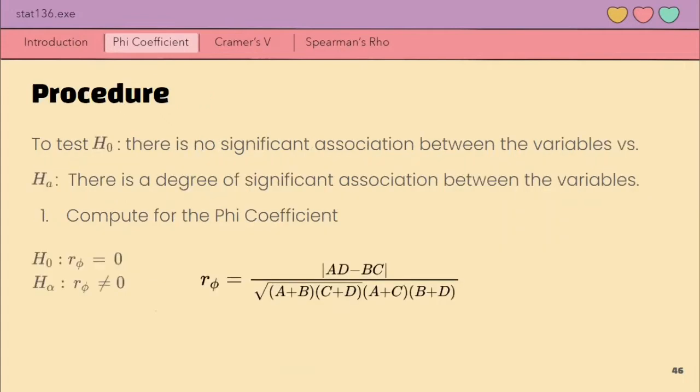For the procedure of testing the null hypothesis wherein there is no significant association between the variables versus alternative that there is a degree of significant association between the variables. First, we will compute for the phi coefficient. So our phi coefficient is equal to absolute value of AD minus BC all over square root of A plus B times C plus D times A plus C times B plus D, which we will find in our 2 by 2 table.